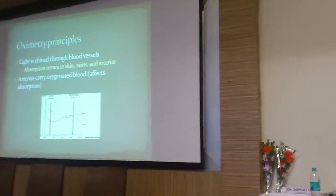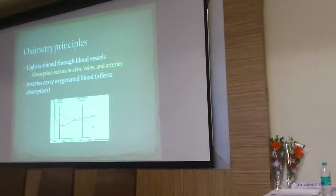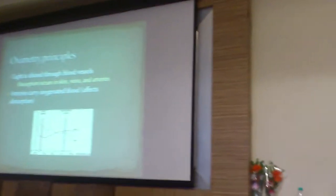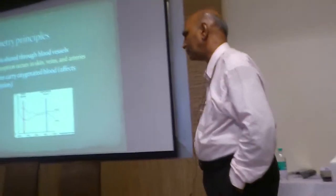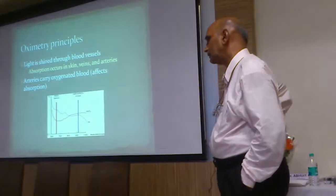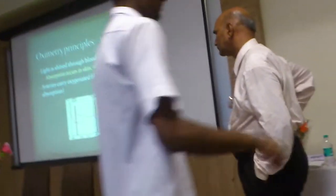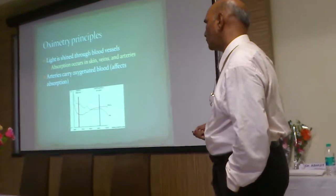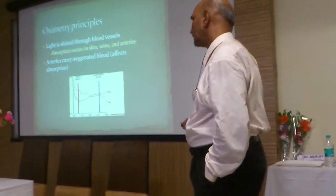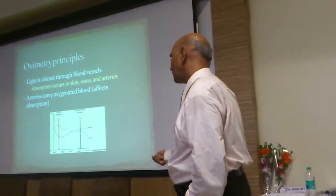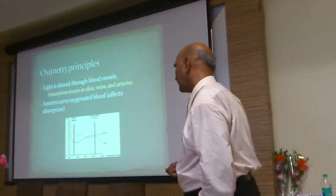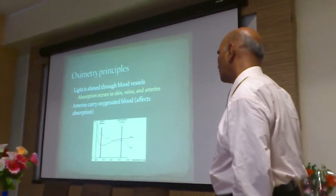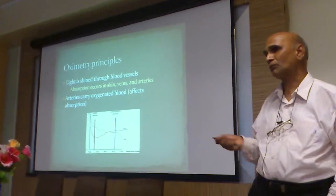What is the operating principle? Light is passed or shined through the blood vessels. The absorption occurs in skin, tissue and the arteries. The arteries carry oxygenated blood and affect the absorption. There are two curves — red at 660 nanometres and infrared at 910 nanometres. This is the electromagnetic spectrum. The absorption curve for HbO2 (oxyhemoglobin) and Hb (hemoglobin) are shown. We make use of these absorption properties of haemoglobin and oxyhaemoglobin to detect the concentration of oxygen inside the patient's blood. This technique is non-invasive — you don't have to prick or put anything inside the body. It looks at the fingertip, or the earlobe, or the forehead.